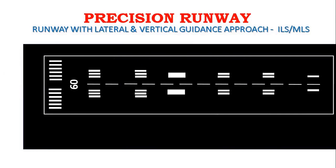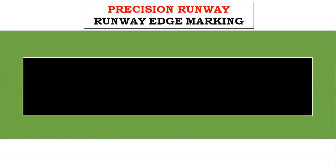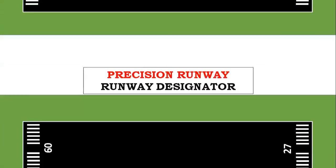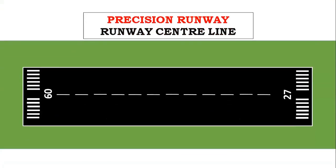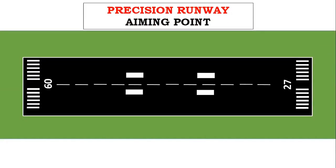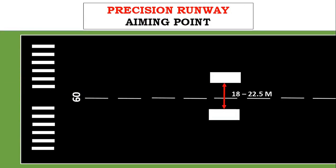Precision runway: a runway with both lateral and vertical guidance, for example an Instrument Landing System (ILS). For a precision runway we have runway edge markings, threshold markings, runway designator, and runway centerline. The centerline width for CAT 2 and CAT 3 runways is 0.9 meters; for others it is 0.45 meters. The aiming point marking has a length of 30 to 60 meters, a width of 4 to 10 meters, and the lateral distance between the two aiming point markings is 22.5 meters.